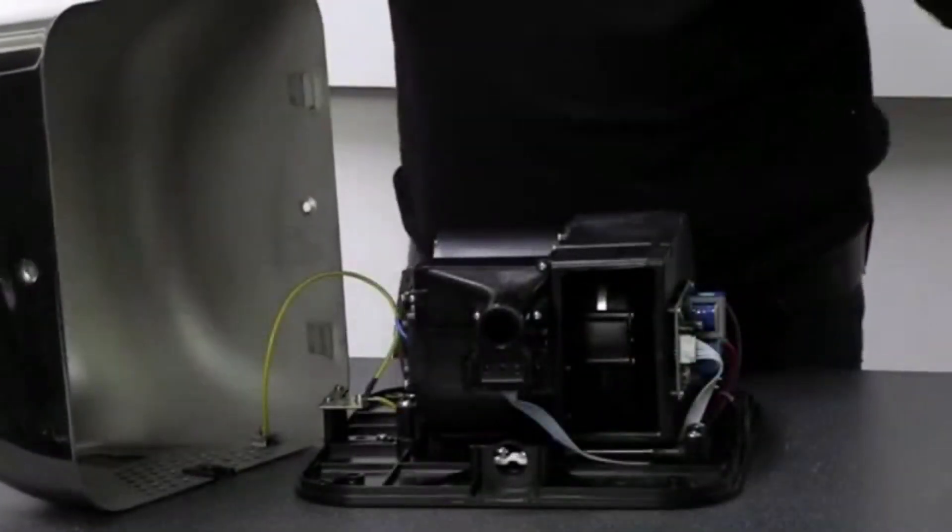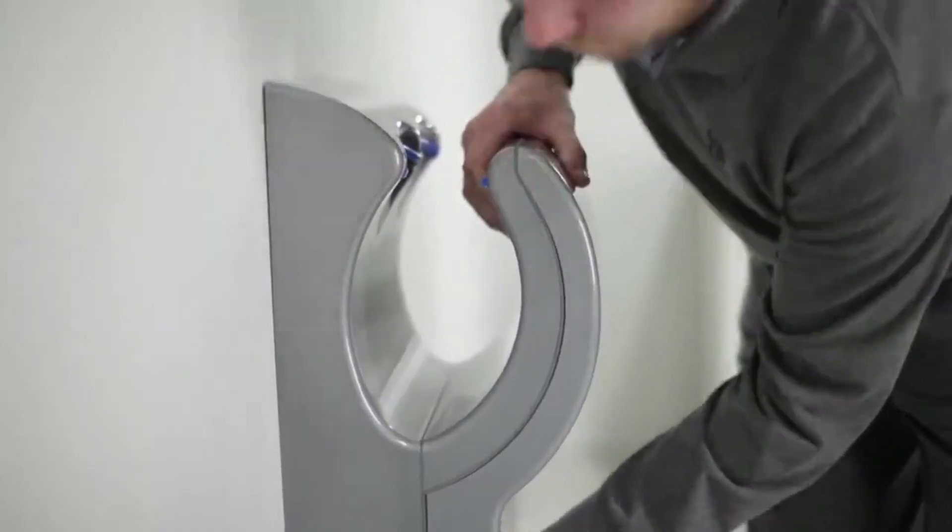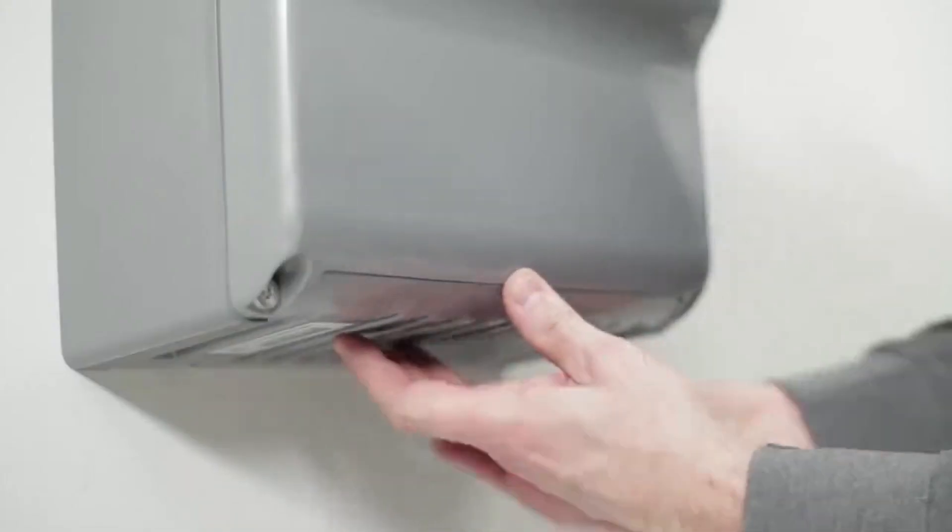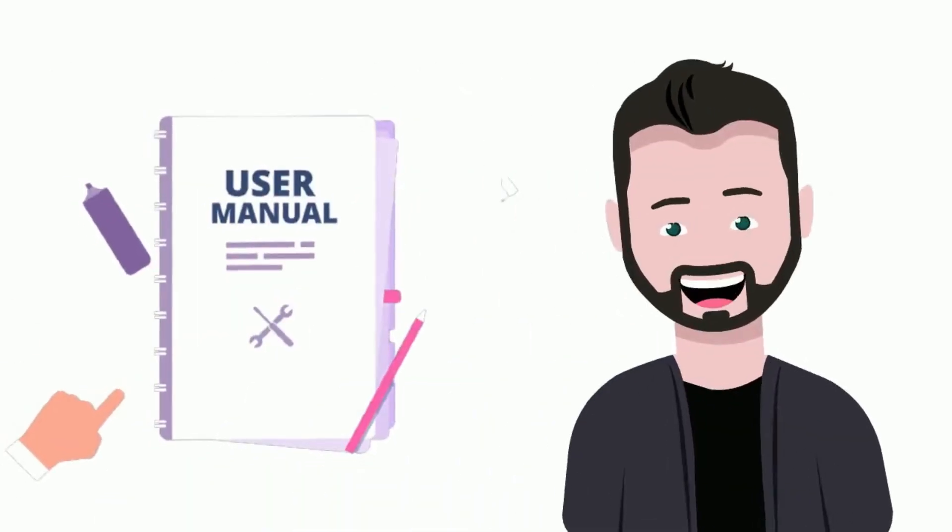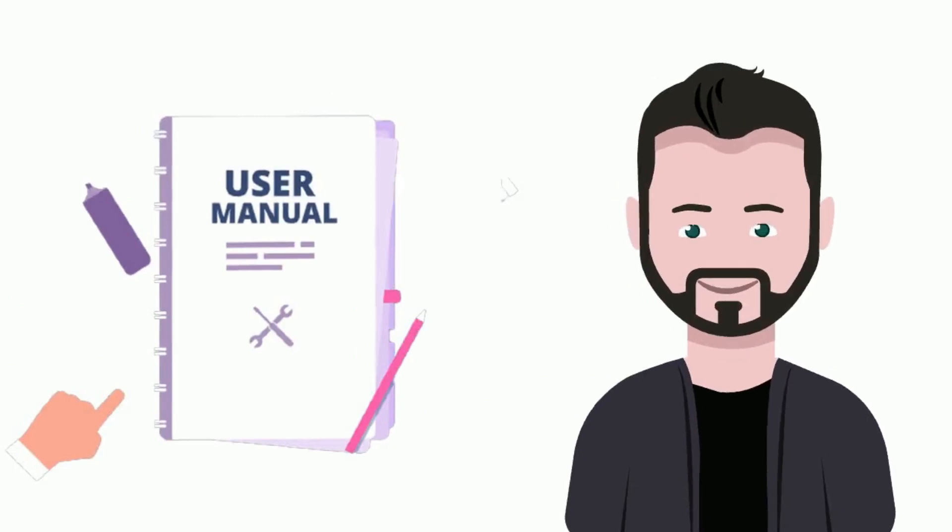This may be slightly different when you install a JET hand dryer like the Dyson. It is usually very self-explanatory when it comes to removing the cover. Please refer to the hand dryer's user manuals, which may hold further information.